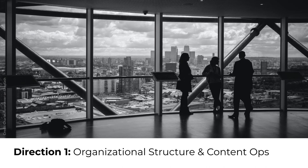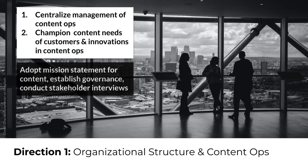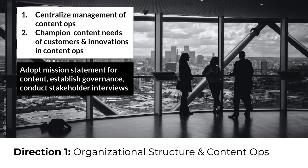The first potential direction for a content strategy is organizational structure — this characteristic focuses on the level at which an organization's structure supports publishing consistently high-quality and efficient content. For organizations with lower maturity levels, content strategy should focus first on centralizing management of content operations. With management representation, the focus can then expand to championing the content needs of customers and innovating in content ops. That includes adopting an organization-wide mission statement for content, establishing content governance, or conducting stakeholder interviews. Content ops must have representation and strong leadership within an organization — if it's lacking, it'll be a struggle to implement any content ops tactics, let alone a true content strategy.